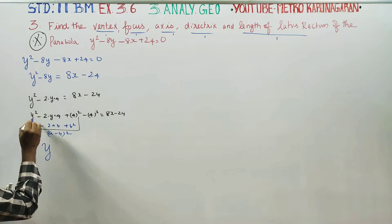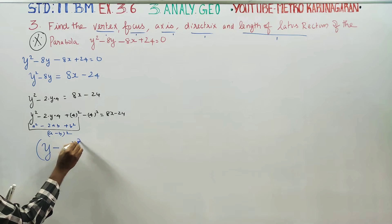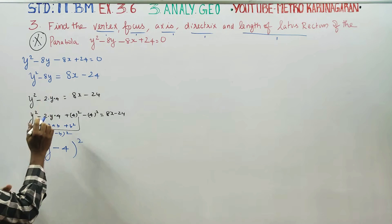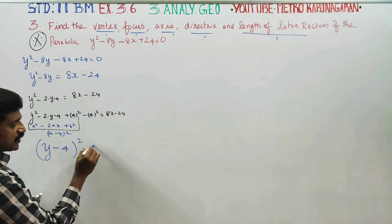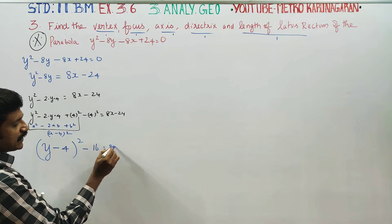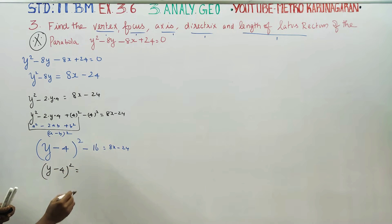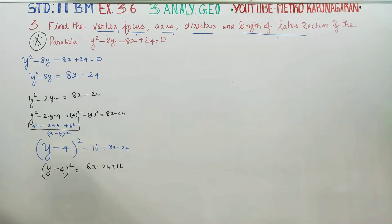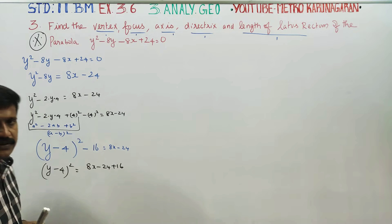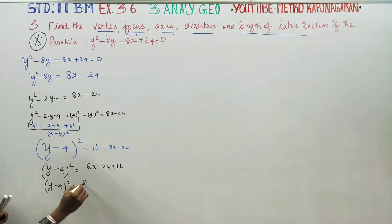A is y, B is 4. So we get (y minus 4) whole square. Minus 4 squared is minus 16. This equals 8x minus 24. Next stage: (y minus 4) whole square is equal to 8x minus 24 plus 16.